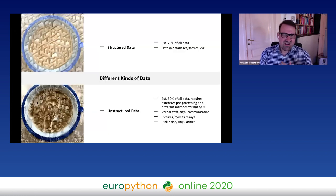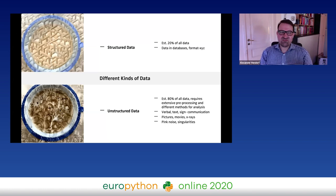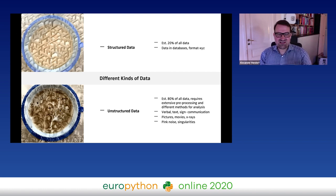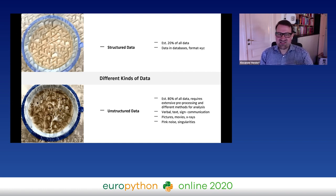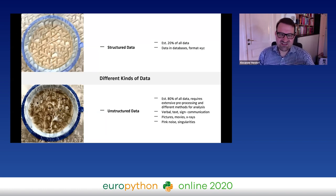In general, there are two types of data: structured data and unstructured data. Only 20% of the data we have is assumed to be structured, so the vast majority — 80% — is unstructured. Text, verbal or sign communications, pictures, movies, X-rays — all this is unstructured data and this is the vast majority. It's just an estimate; the old 80/20 estimate, which usually works really well.